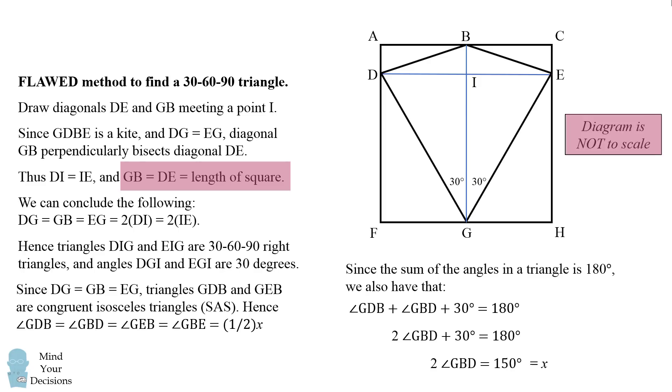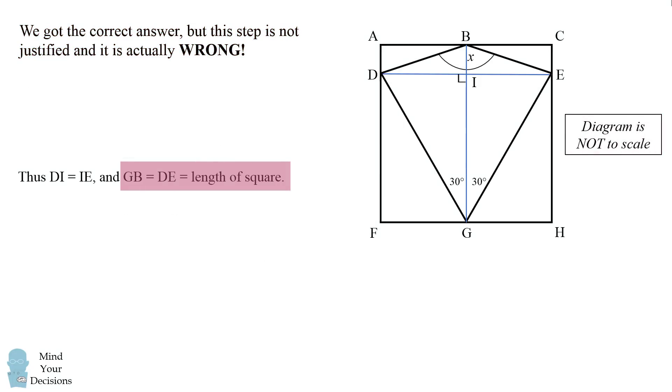So you think these are the sides of the square and therefore they're equal to each other. But the diagram is specifically not to scale. So it's not a justified conclusion to say that GB equals DE equals the length of the square. In fact, this step turns out to be wrong. The kite could actually be rotated inside the square so the diagonals are not parallel or equal to the sides of the square.